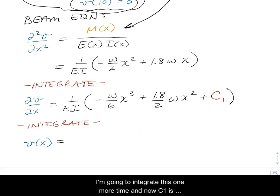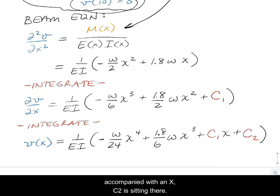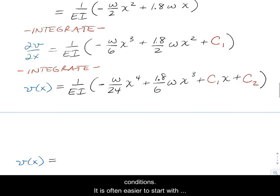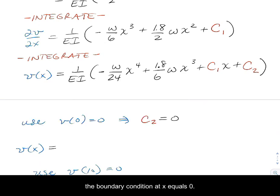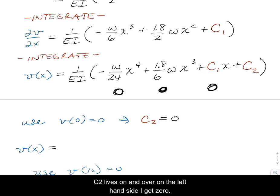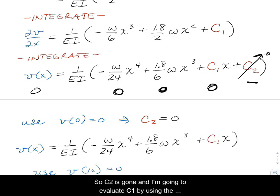I'm going to integrate this one more time. Now C1 is accompanied with an x, C2 is sitting there. I'm going to solve for these two using the two boundary conditions. Often easier to start with the boundary condition at x equals 0. If I plug in x equals 0, I get a 0, I get a 0, I get a 0. C2 lives on, but on the left-hand side I get 0. So I just found out that C2 equals 0. I'm going to rewrite the equation, so C2 is gone.